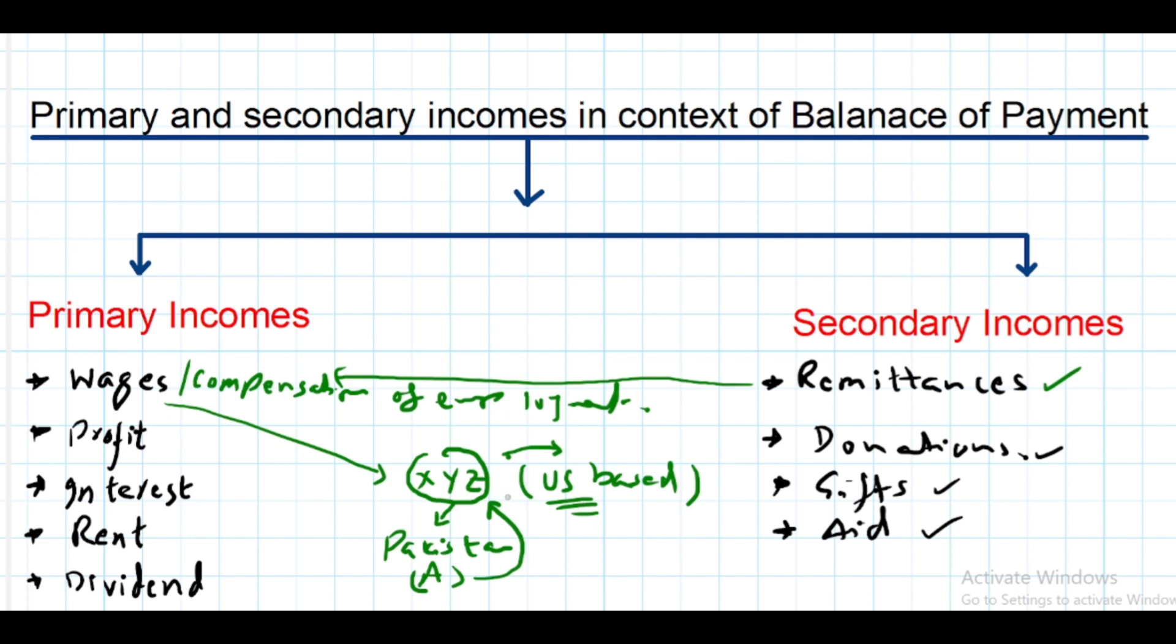When XYZ pays wages to Mr. A, who is a resident of Pakistan working in XYZ - which is a subsidiary of XYZ working in Pakistan - then all the wages and salaries received by Mr. A will be recorded as primary income and will be part of wages and will be recorded in this part.